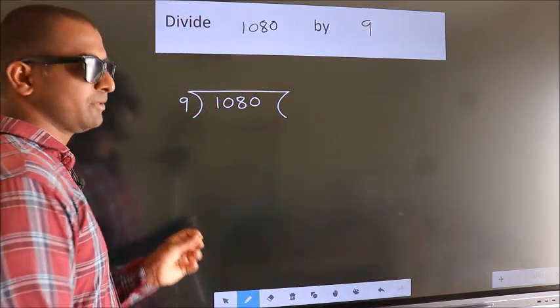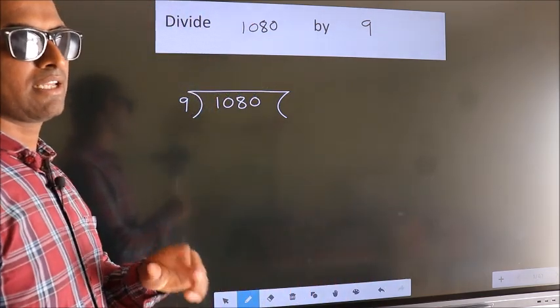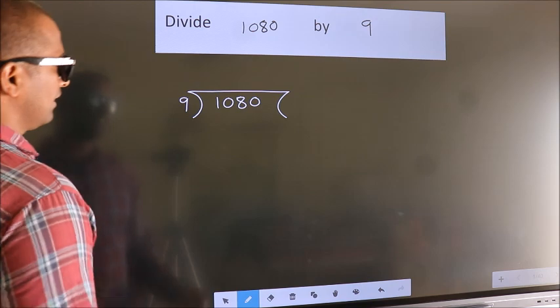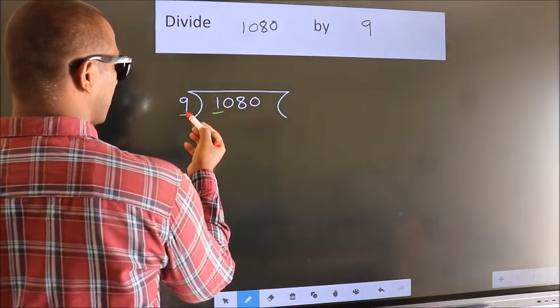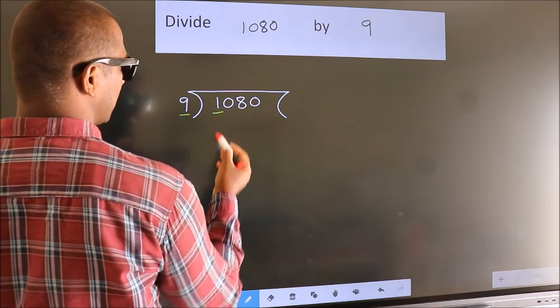This is your step 1. Next, here we have 1, here 9. 1 is smaller than 9, so we should take 2 numbers.